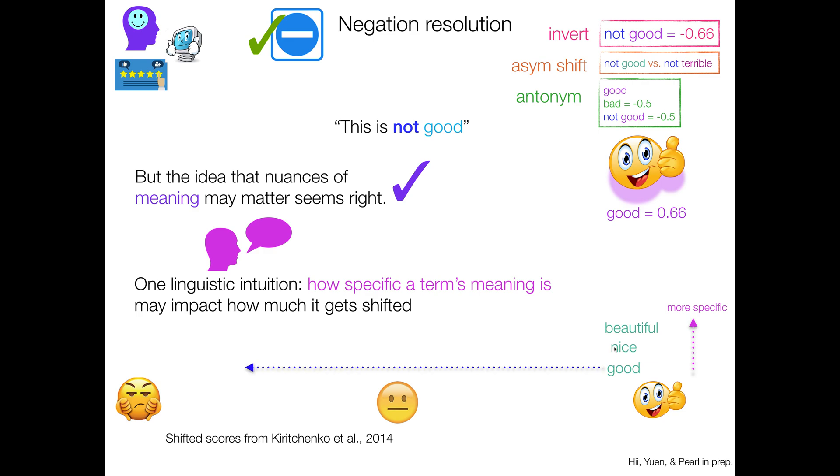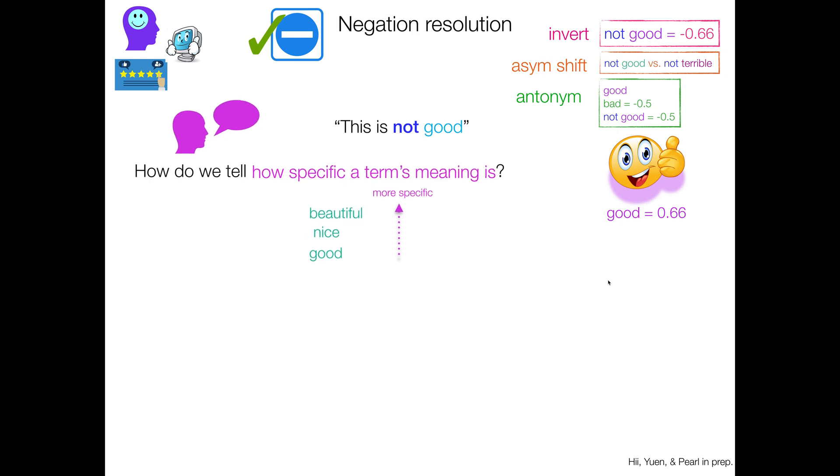not good is pretty bad, not nice is maybe a little less bad, and not beautiful, maybe it's still pretty good. And these are actually our shifted scores from a study that actually assessed them. So like, these are real differences, even though these terms started out with the same basic sentiment score.